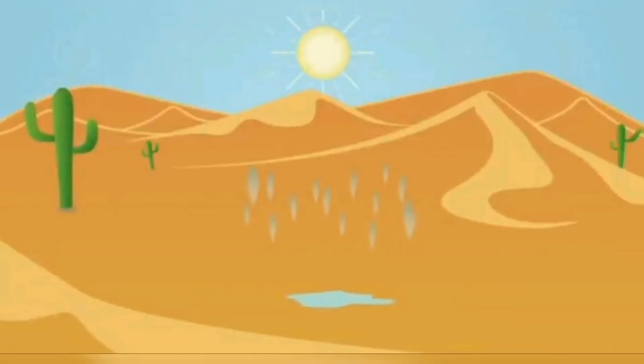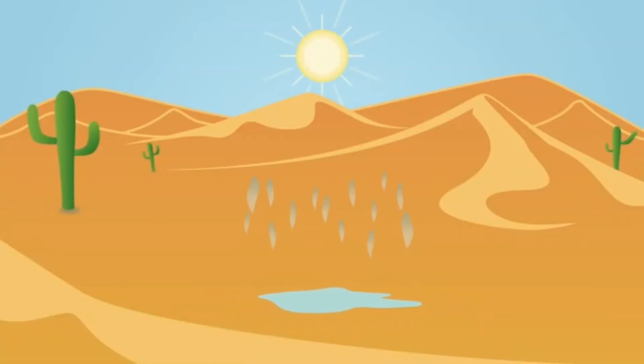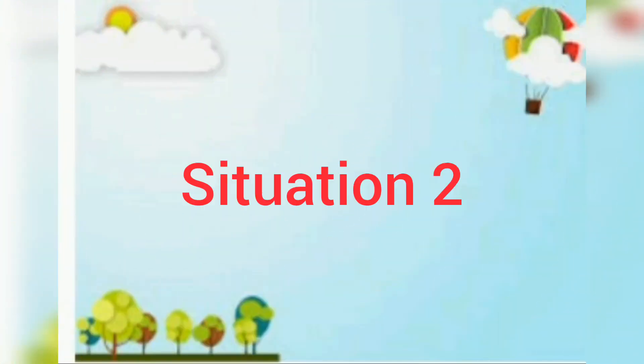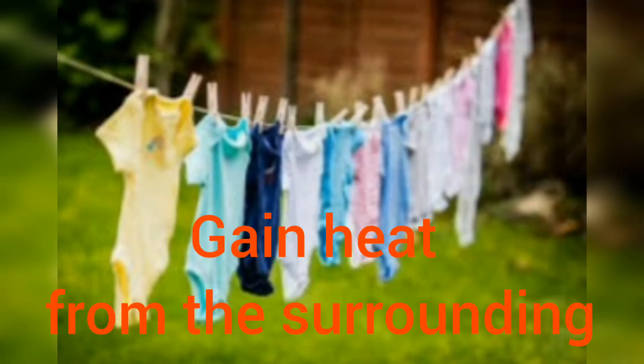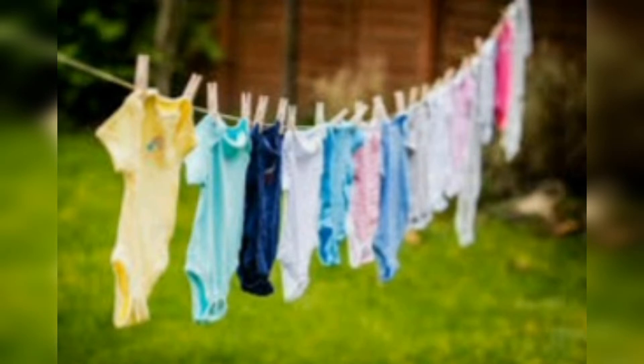Look at this puddle. When the surface of water in the puddle is exposed to sunlight or surrounding heat, it changes to water vapor. When wet clothes gain heat from the surrounding, the water from the wet clothes changes to water vapor — that's why the clothes become dry.